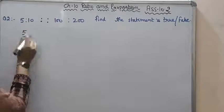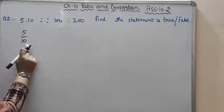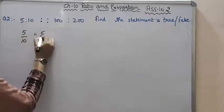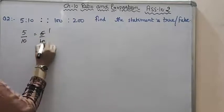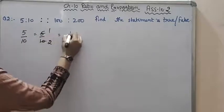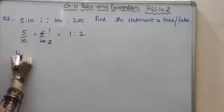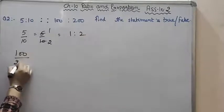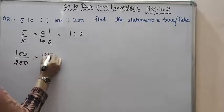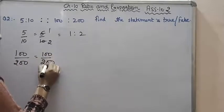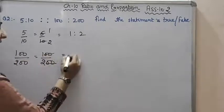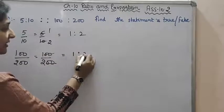So five by ten, five is to ten. We'll solve this. Five by ten - five ones are five, five twos are ten. So that is one is to two. So let's find out the other one, hundred over two hundred. We'll simplify this too. Two zeros cancel, and what answer are we getting? One is to two.